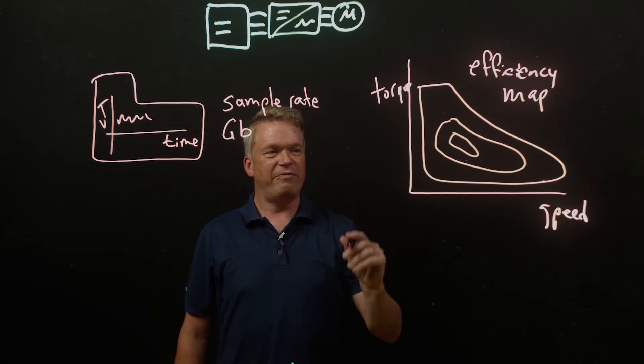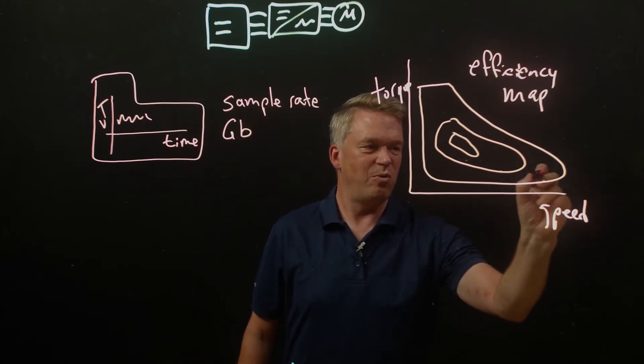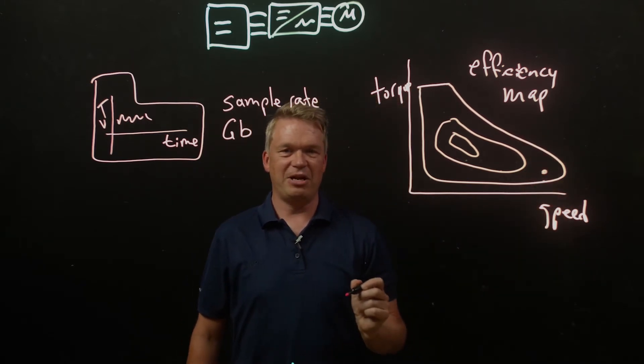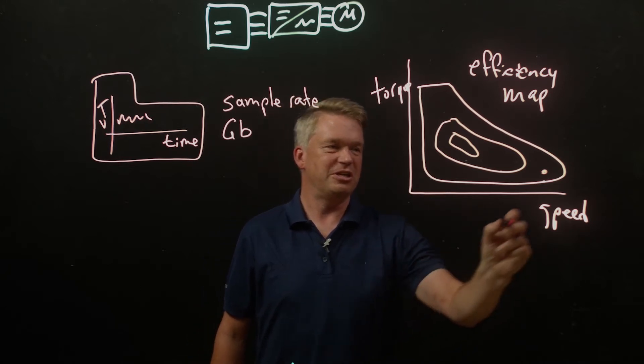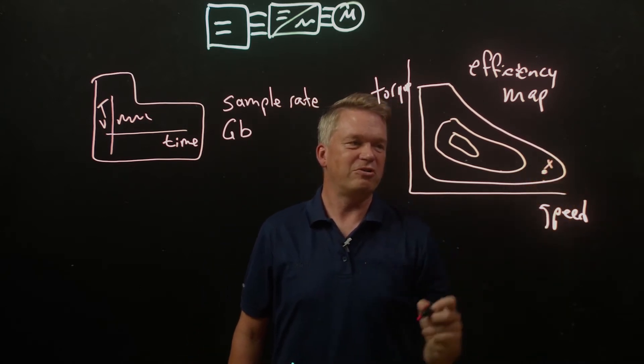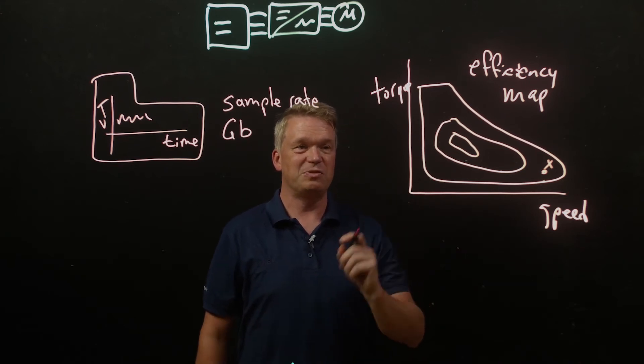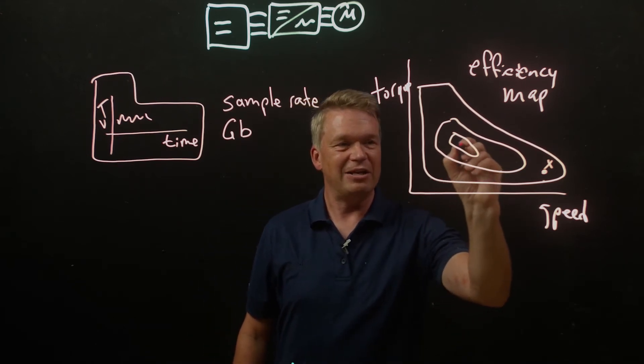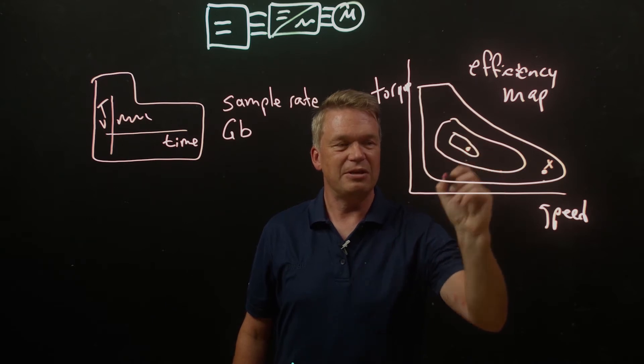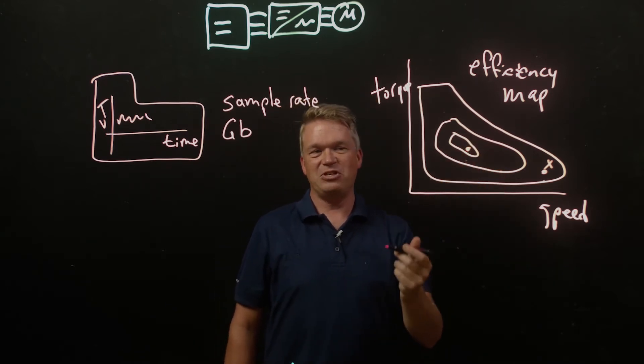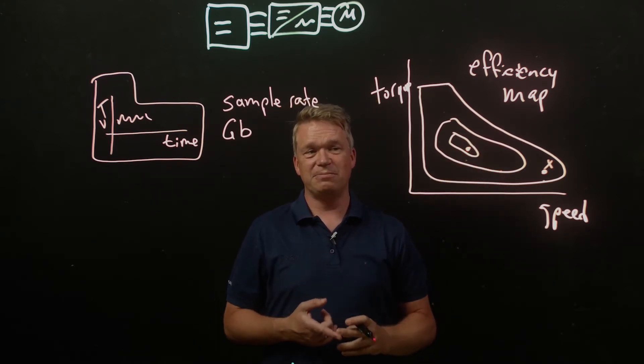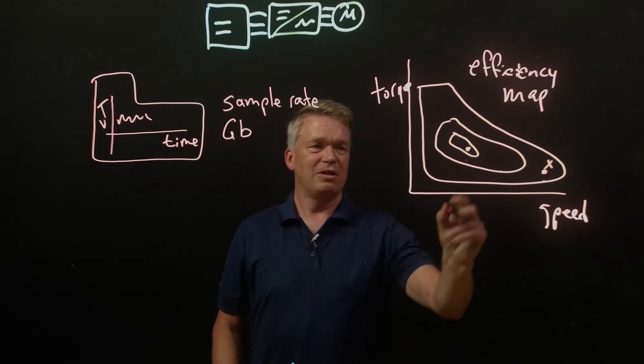So right away here, we're starting to quantify an important thing. We certainly don't want to operate in this condition right here. This is a low efficiency condition. So our motor control algorithm shouldn't push us in that direction. We don't want to operate that combination of speed and torque. But on the other hand, if we can control this thing in such a manner that we can operate at high efficiency, now we've improved performance and improved range. So this is a good thing.